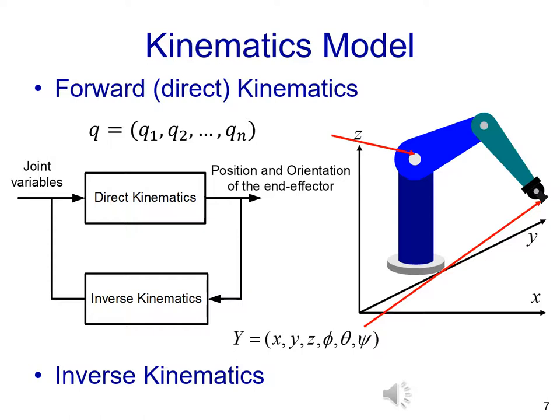Remember that we have Forward Kinematics and Inverse Kinematics. Forward Kinematics is the problem of: given joint variables — let me name these joint variables Q1 through Qn, forming a vector of joint variables — we want to obtain the position and orientation of the end effector.